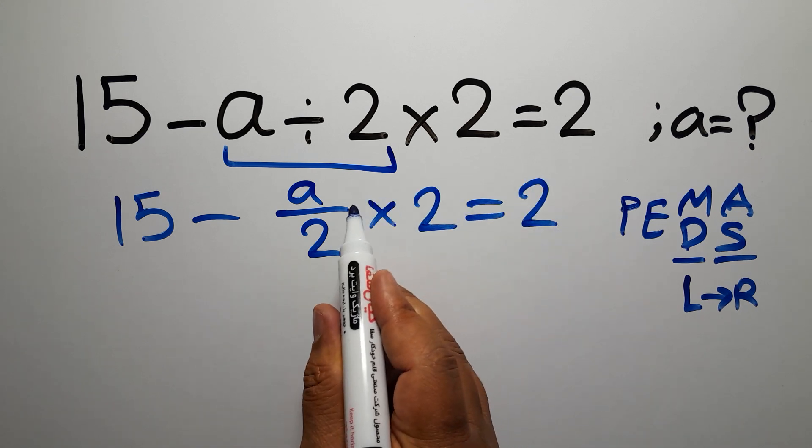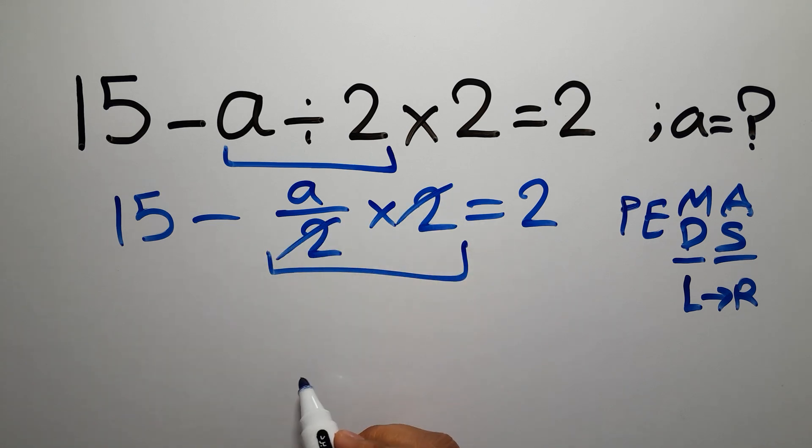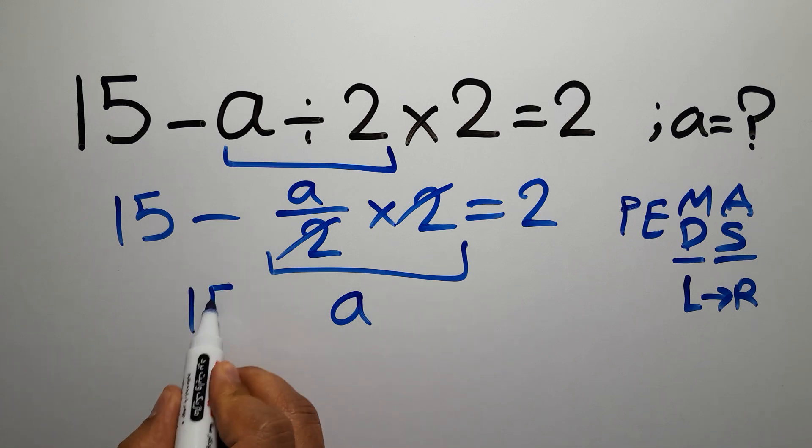Now we have to do this multiplication. These two and these two can cancel each other out, so we have just a, and 15 minus a is equal to 2.